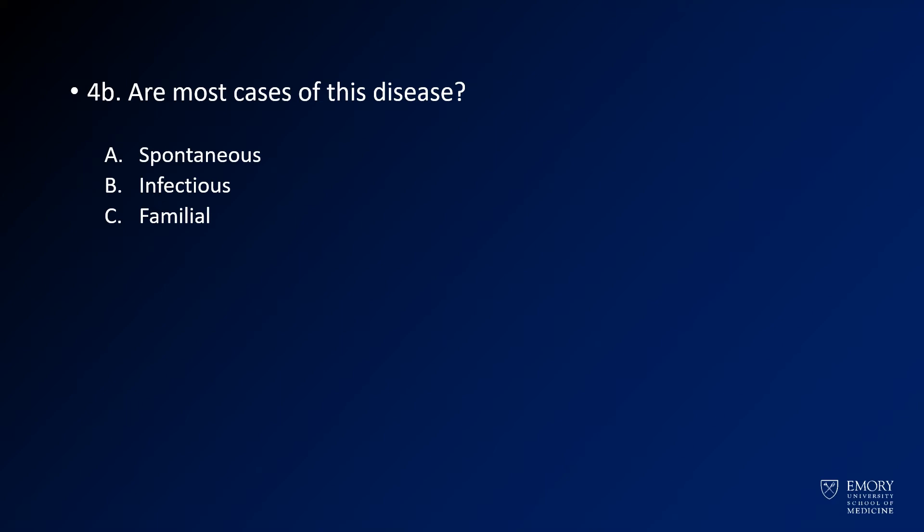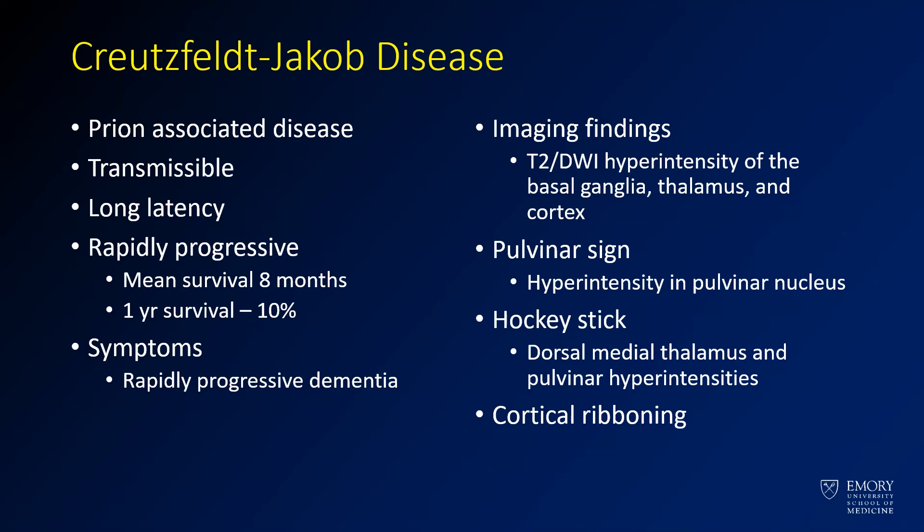In this case, what we're dealing with is an MRI of a patient with Creutzfeldt-Jakob disease. This is a prion-associated disease. This is a transmissible disease, so these prions induce abnormal protein folding in other proteins. When you're exposed to the prion, you have a very long latency.